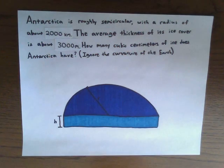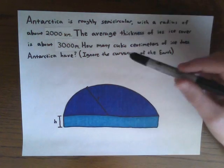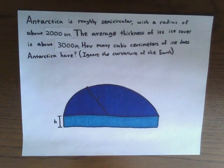Antarctica is roughly semicircular with a radius of about 2,000 kilometers. The average thickness of its ice cover is about 3,000 meters. So using that information, what we are going to find is how many cubic centimeters of ice does Antarctica have.